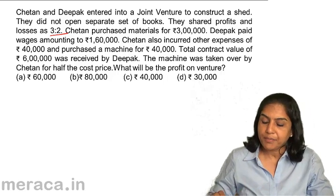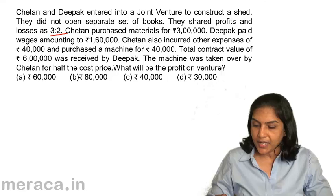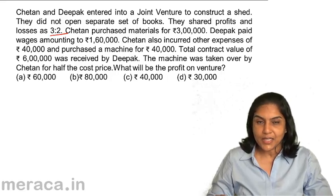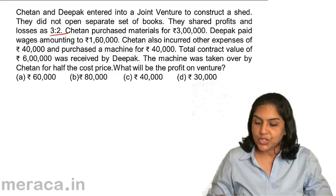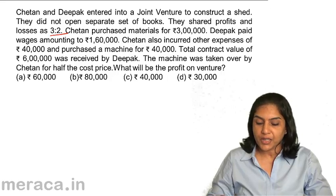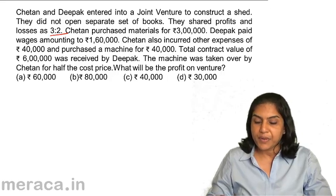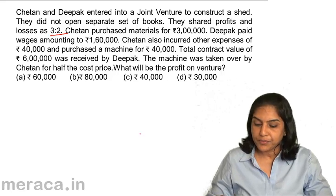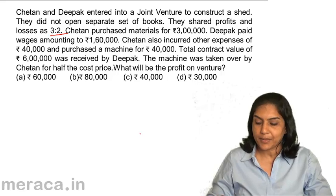Chetan purchased materials for ₹3 lakh. Deepak paid wages amounting to ₹1,60,000. Chetan also incurred other expenses of ₹40,000 and purchased a machine for ₹40,000. The total contract value of ₹6 lakh was received by Deepak.